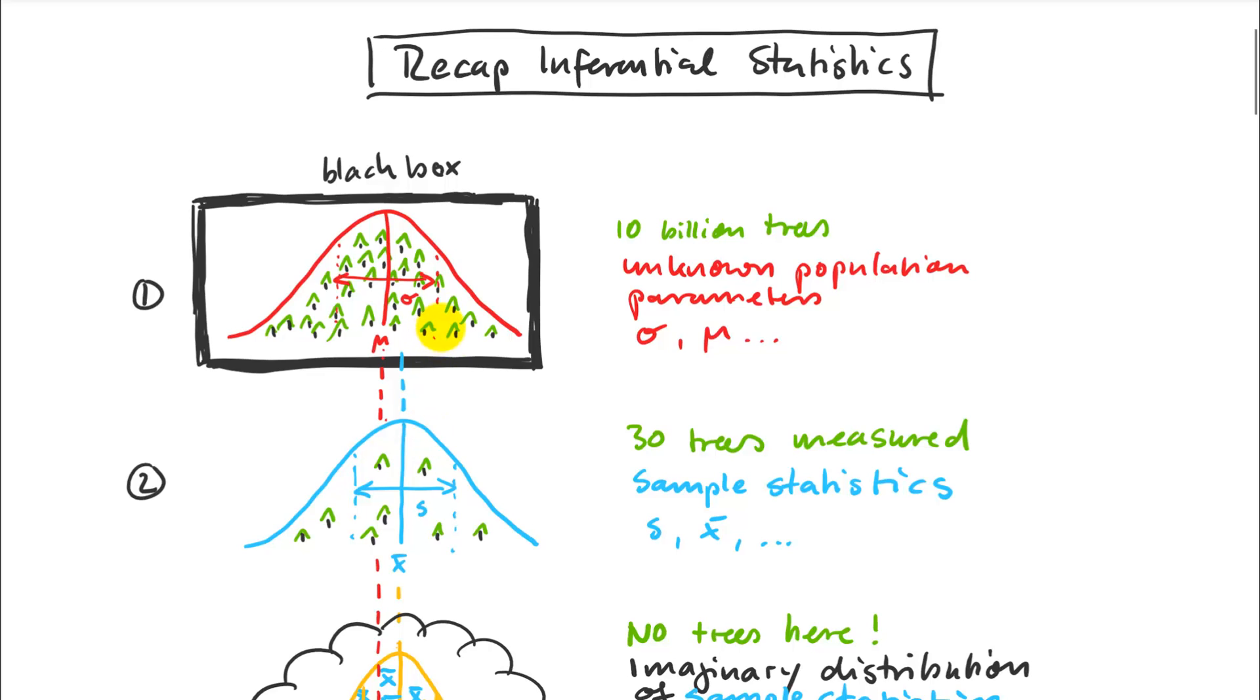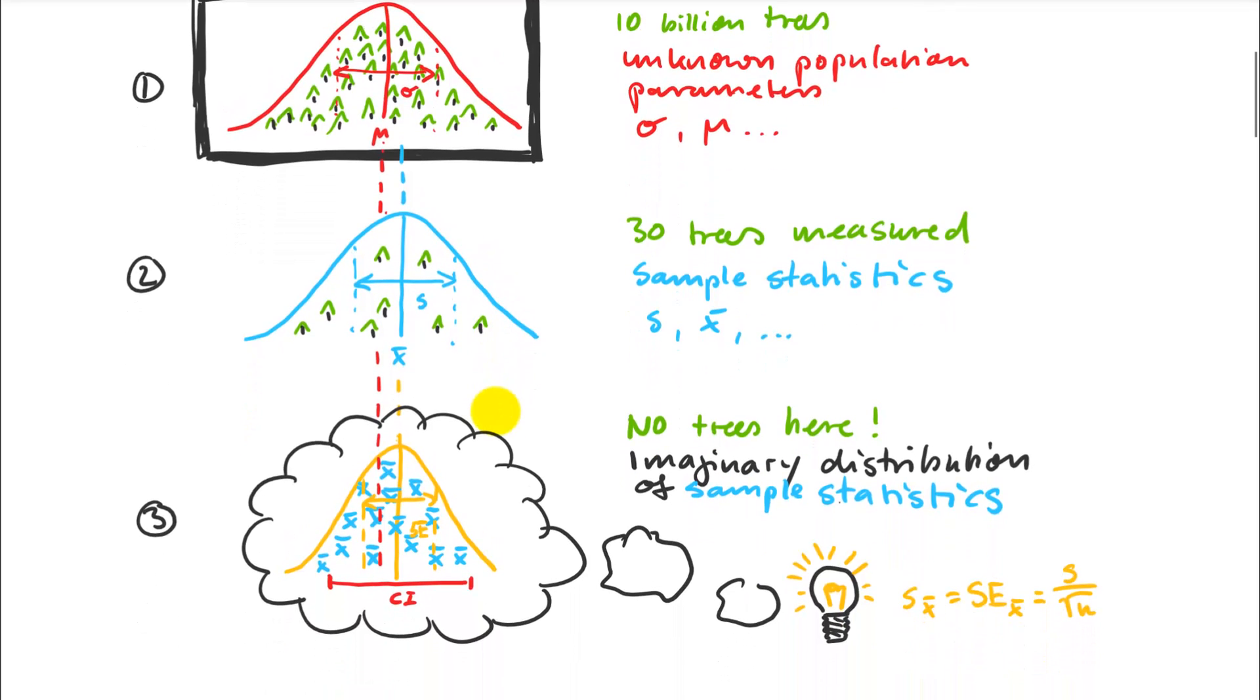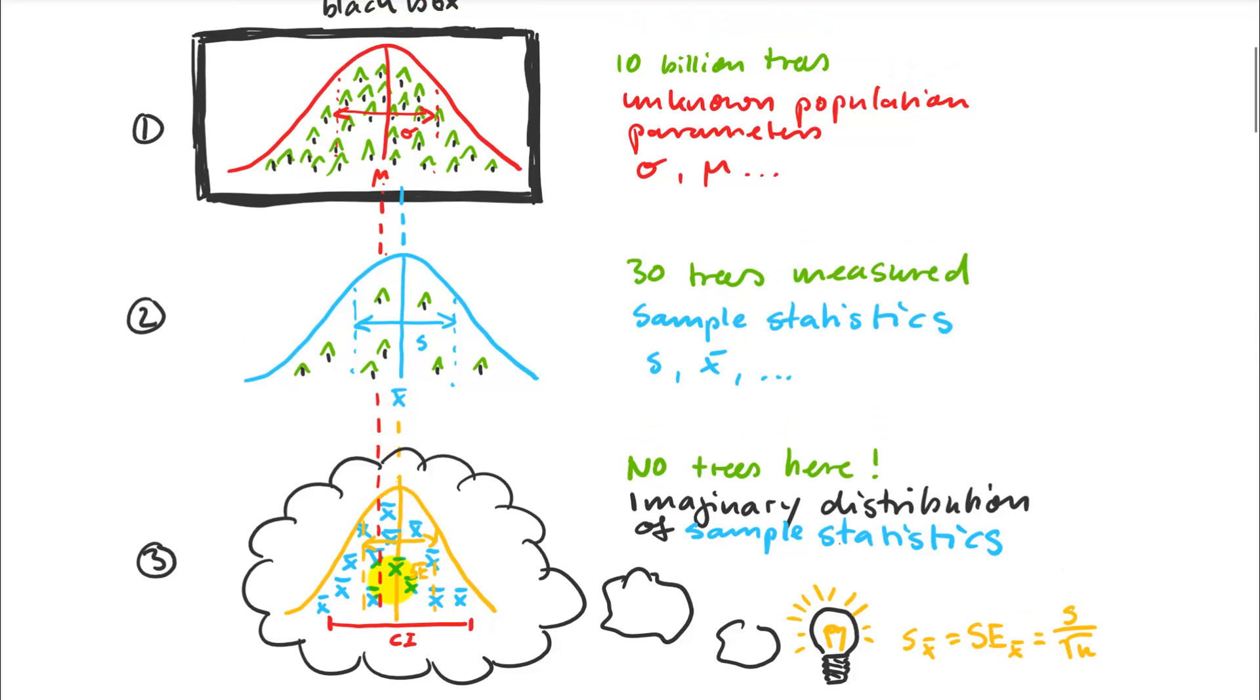We want to know how far we are off that true population mean, how certain we can be about this, but there's no way for us to figure this out. If you just have that one sample, you need repeat studies. The brilliant thing about statistics is that we do the repeat studies, we imagine the repeat studies. We found a way to estimate how the means would be distributed if we were to repeat the study. If I draw these diagrams from now on, there are never any trees in those distributions. This is a distribution of imaginary means that can be estimated with this beautifully simple formula.